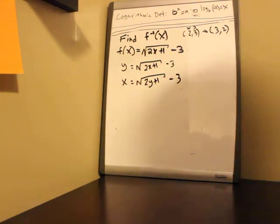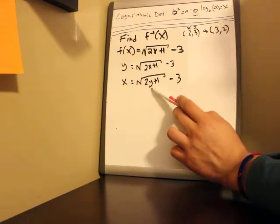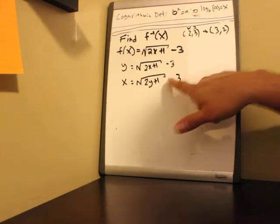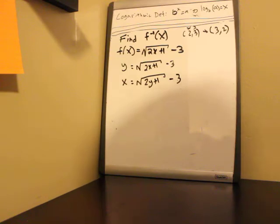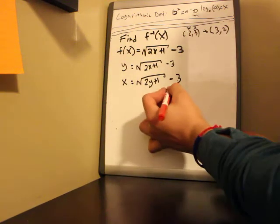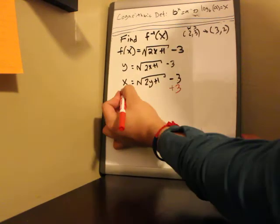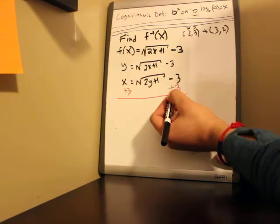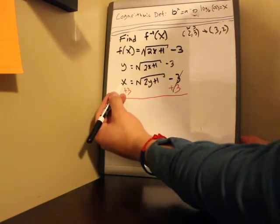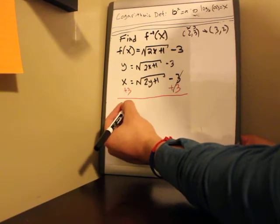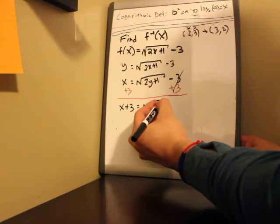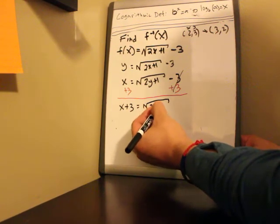Now I want to isolate y — I want to solve for y. So I want to move everything to the other side. We always need to undo any adding or subtracting. We see that there's a subtracting sign, so how do we undo subtracting? We need to add 3 to both sides. So we're going to add 3 to both sides. Minus 3 plus 3 is just 0, so here we get x plus 3 equals the square root of 2y plus 1.